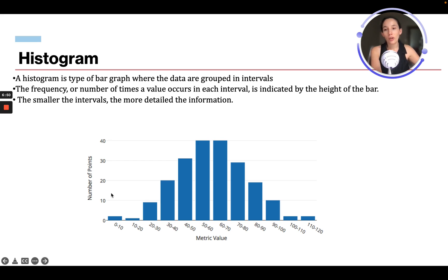So number of points - the number of times a value occurs. Let's say these are exam scores. If people got 0 to 10, they're here. 10 to 20 is here, 20 to 30 here. So what this means is there were 40 people that scored between 50 and 60. There are 40 people that scored between 60 and 70. There's like 27, 28 people that scored between 70 and 80. So this is a histogram.